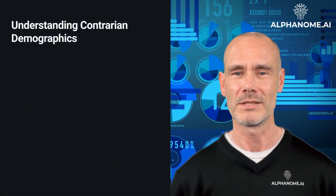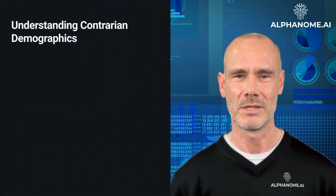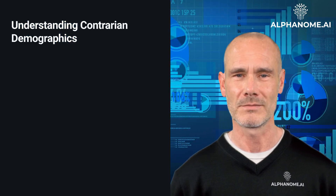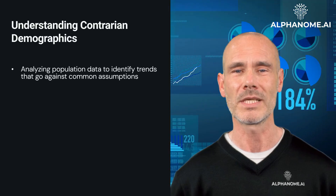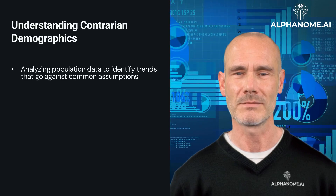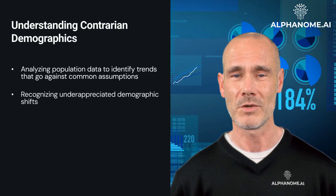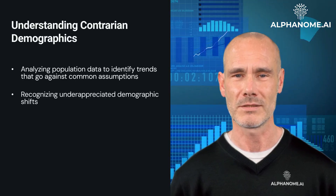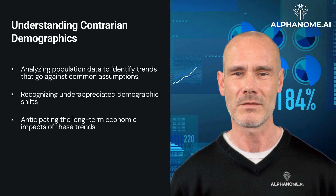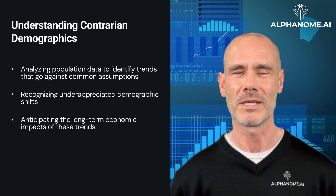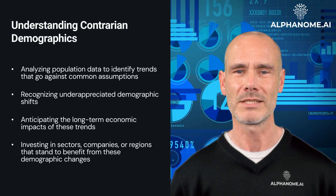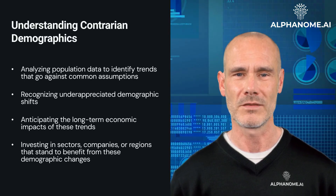Understanding Contrarian Demographics. Contrarian demographic investing involves analyzing population data to identify trends that go against common assumptions, recognizing underappreciated demographic shifts, anticipating the long-term economic impacts of these trends, and investing in sectors, companies, or regions that stand to benefit from these demographic changes.